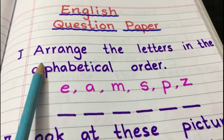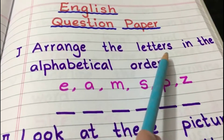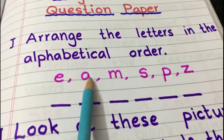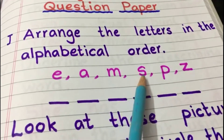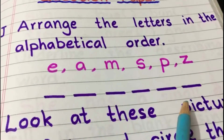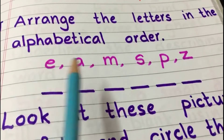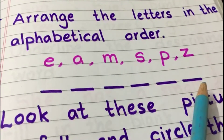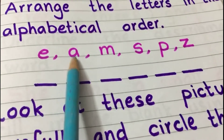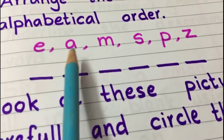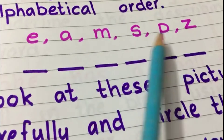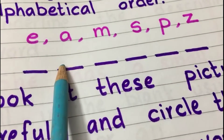The first question is: arrange the letters in alphabetical order. Here we have letters E, A, M, S, P, and Z. Ask your child to arrange all the letters in alphabetical order — that means reading from A to Z. A is there, so ask your child to write A. After A, B, C, D, then E — E is there, so ask your child to write letter E.